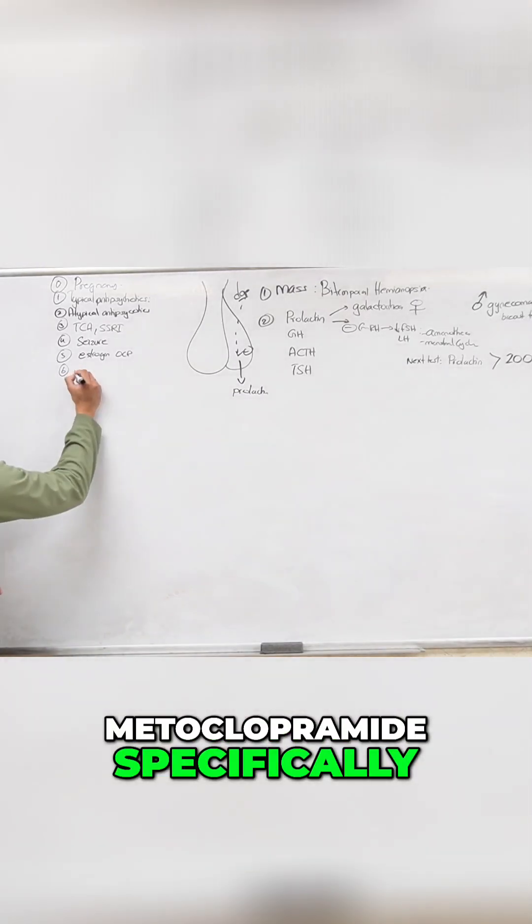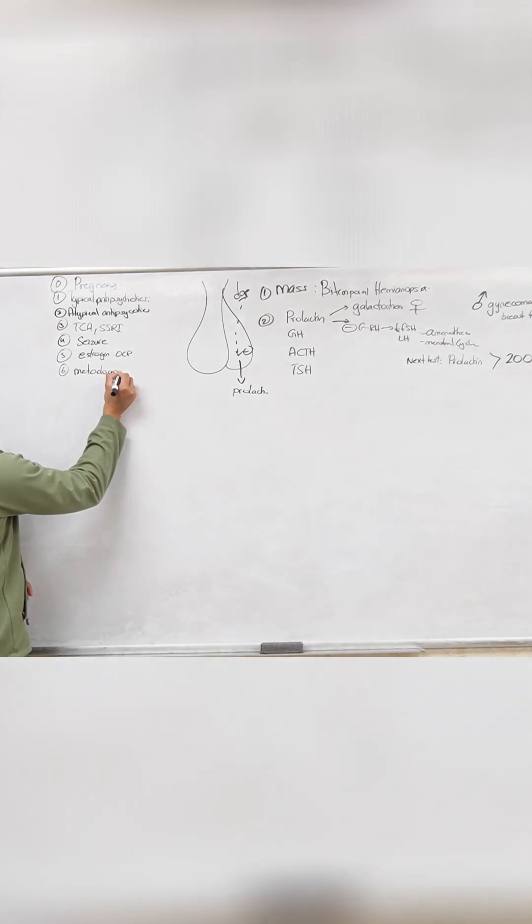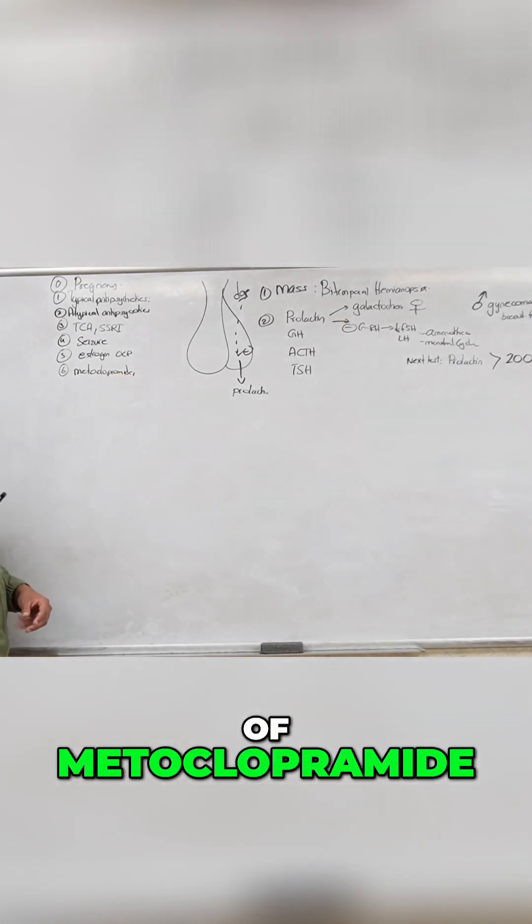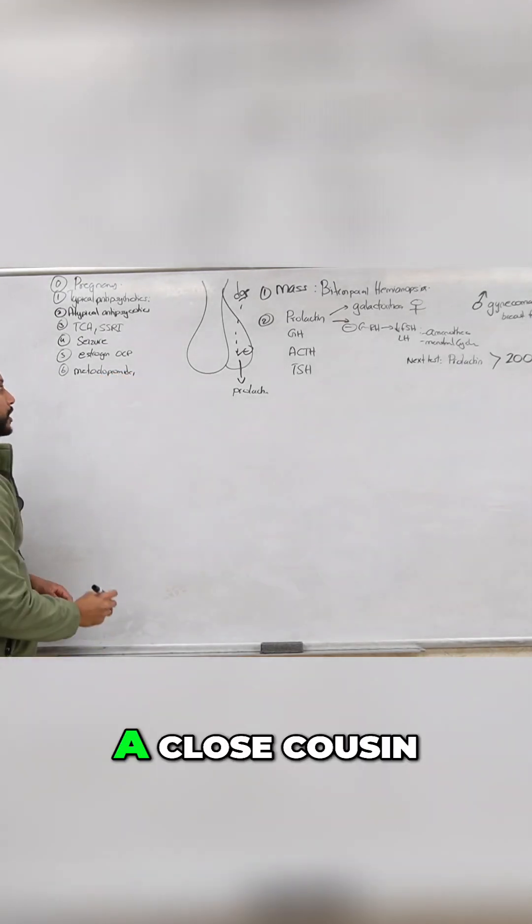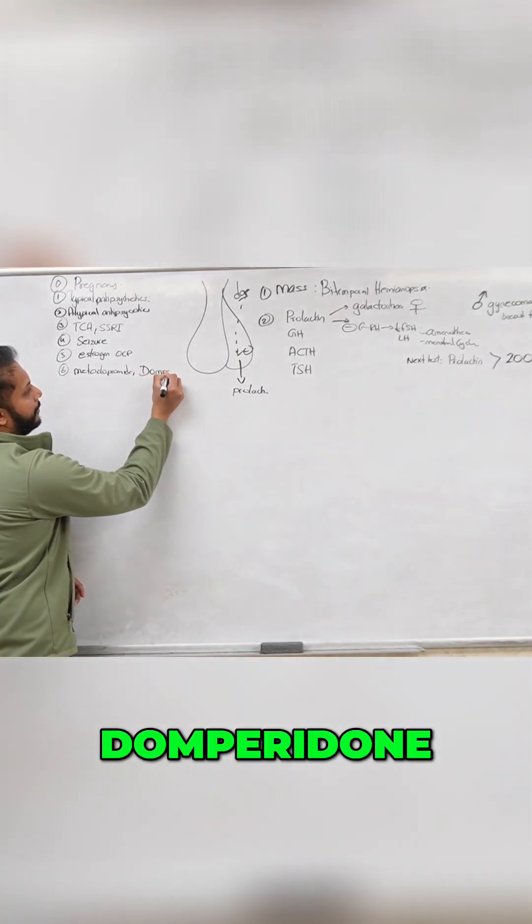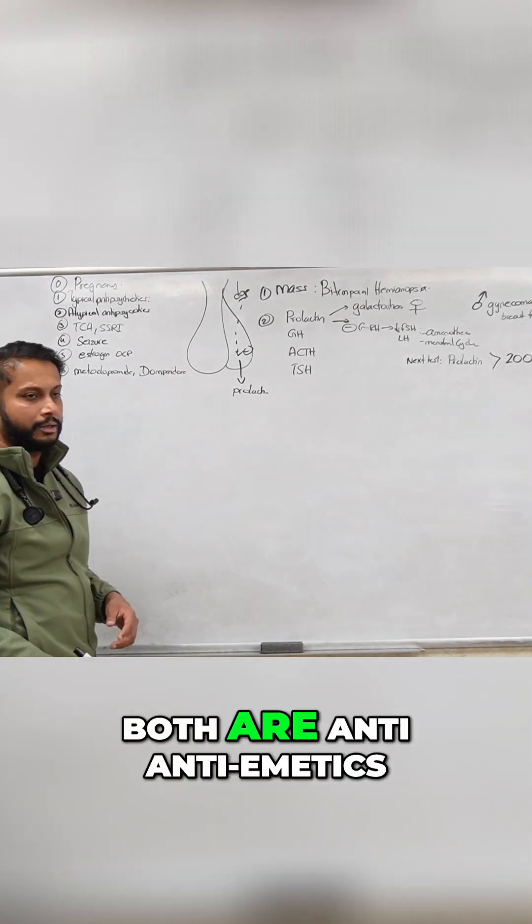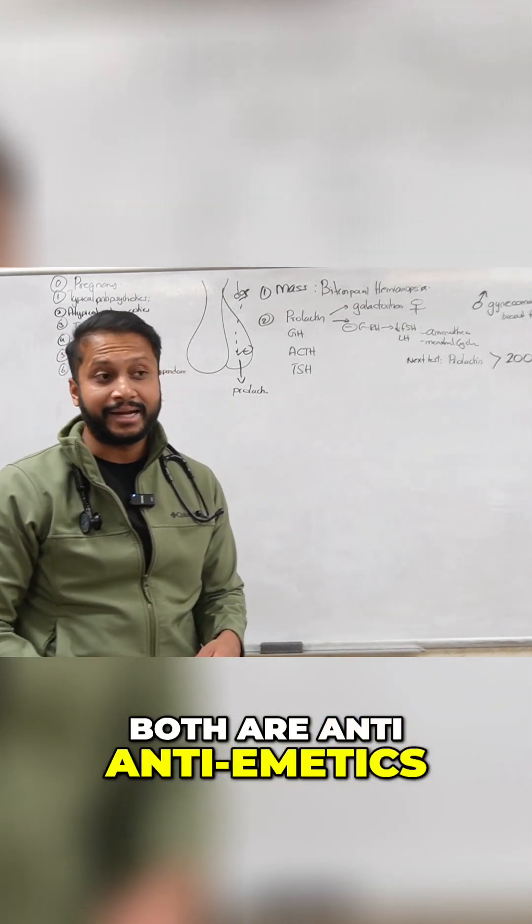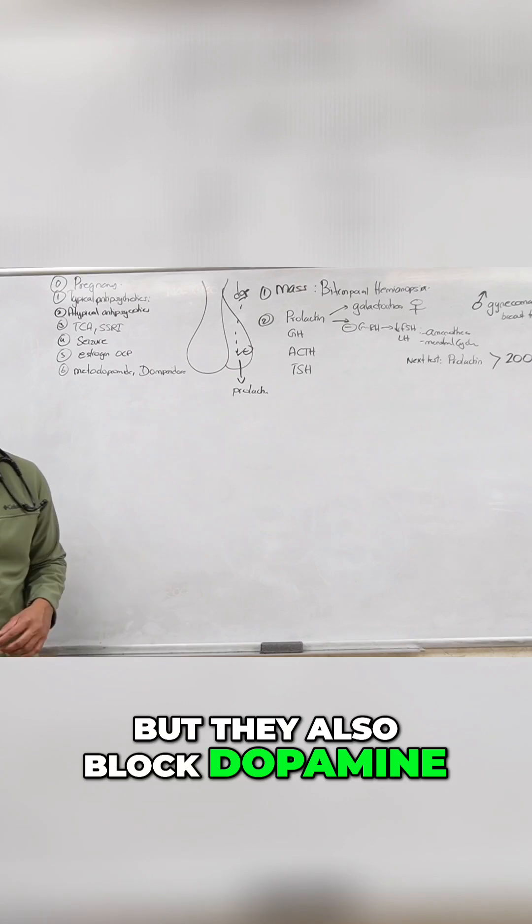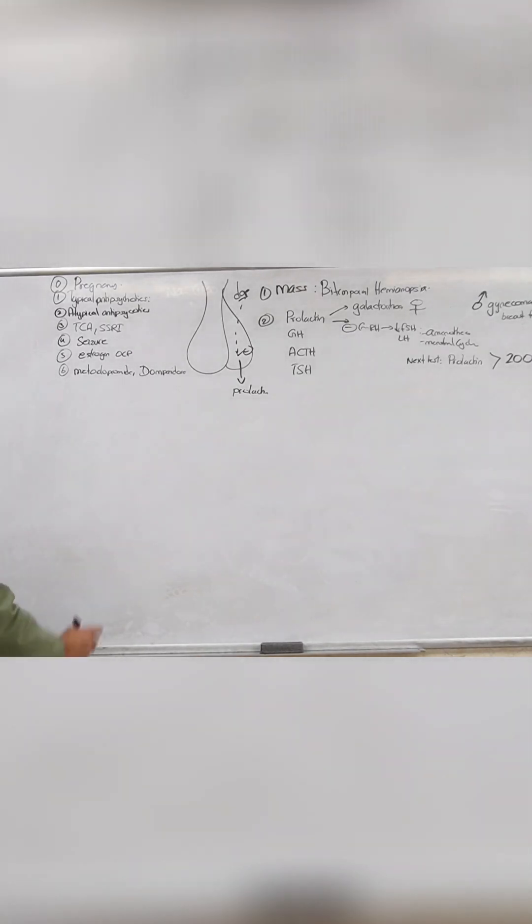Metoclopramide, specifically. What is a close cousin of metoclopramide? Domperidone. Both metoclopramide and domperidone both are anti-emetics, but they also block dopamine. That's why they're going to do it.